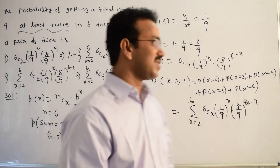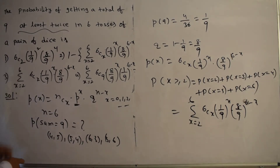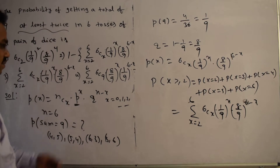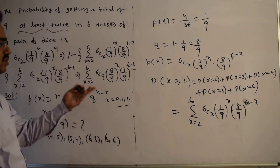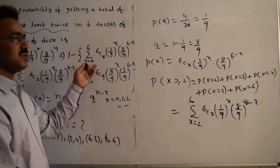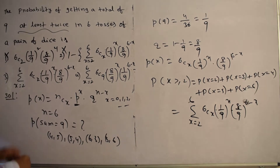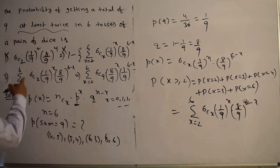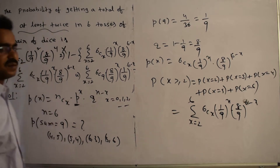Now let's compare with the given options. The option '6C2' alone is incorrect. The form '1 minus summation' is also incorrect. '1 minus P(X=0) + P(X=1)' is also incorrect. The correct option is exactly: x from 2 to 6, 6Cx · (1/9)^x · (8/9)^(6−x). This is the correct option.